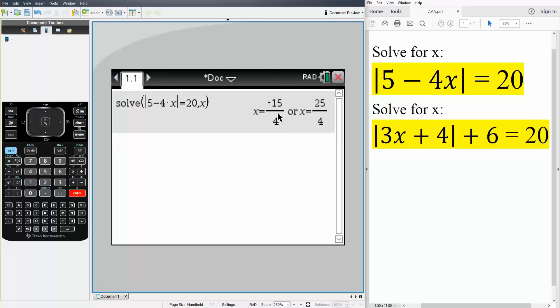We simply hit enter and we get x could be negative 15 over 4 or x could be 25 over 4.